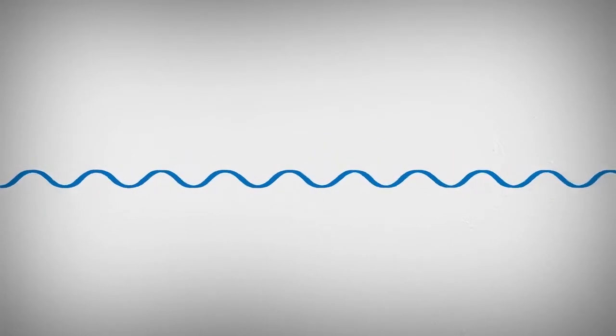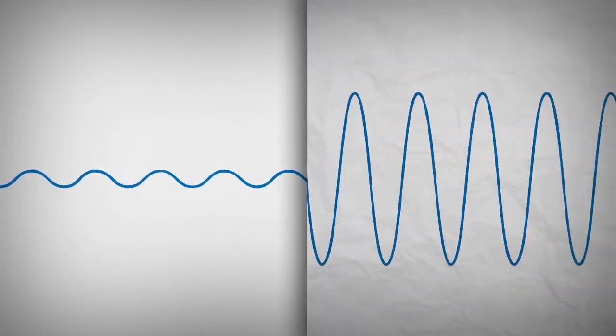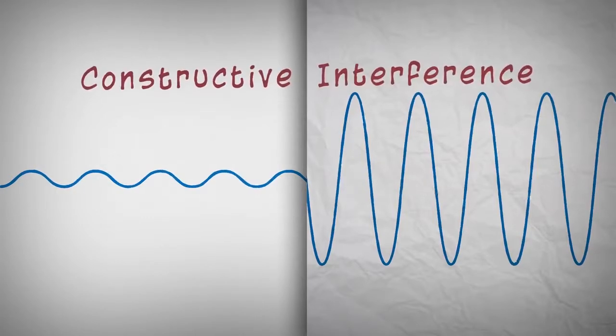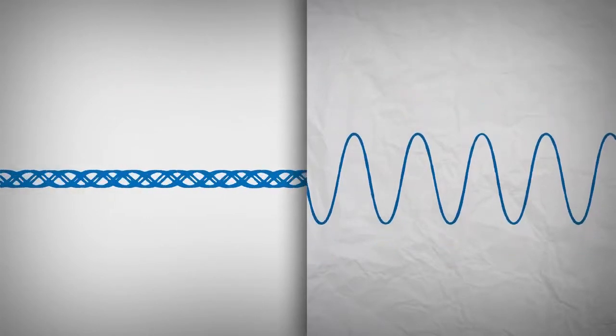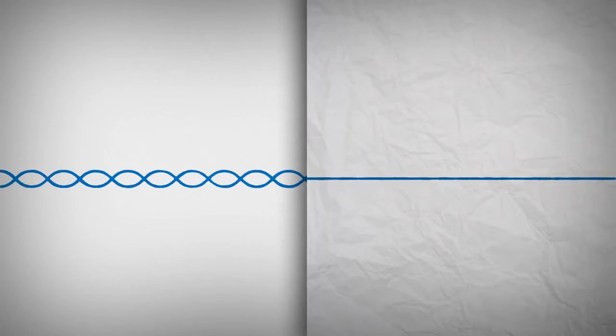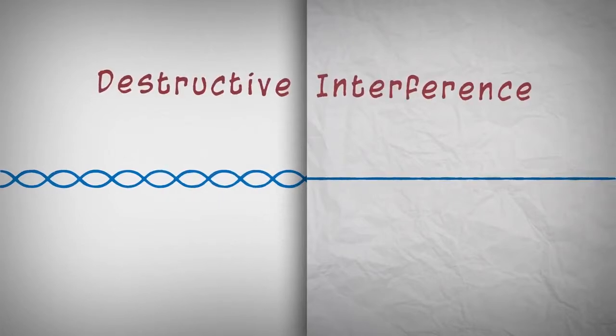Interference occurs when X-rays interact with each other. If the waves are in alignment, the signal is amplified. This is called constructive interference. If the waves are out of alignment, the signal is destroyed. This is called destructive interference.